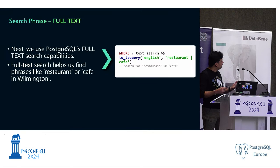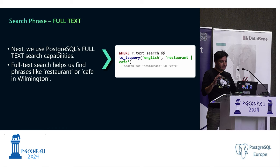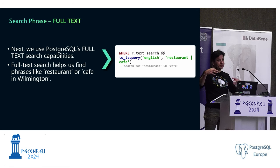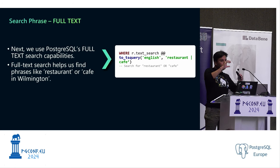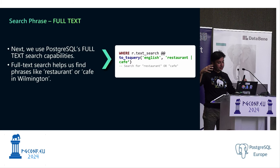Next we use Postgres full-text search capabilities. It's very important to note that full-text search is built inside Postgres — you don't have to install any extensions or do anything separate. It allows you to find phrases more nuancedly and accurately. When you build a full-text index, it creates a hierarchical order of words, removes punctuations, finds the main words, and builds a dictionary tracking how many times each word is repeated.